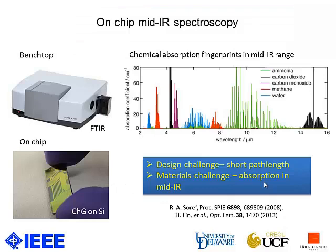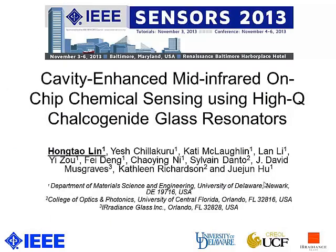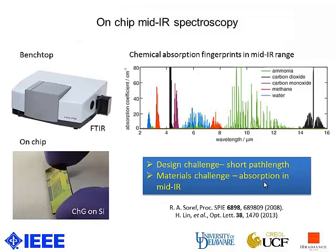Light has been used for chemical sensing for a long time. In the right figure is the chemical absorption fingerprint for some common chemicals in gas phase. As you can see, most chemicals have absorption bands in the mid-infrared range, which makes it an important band for chemical sensing.